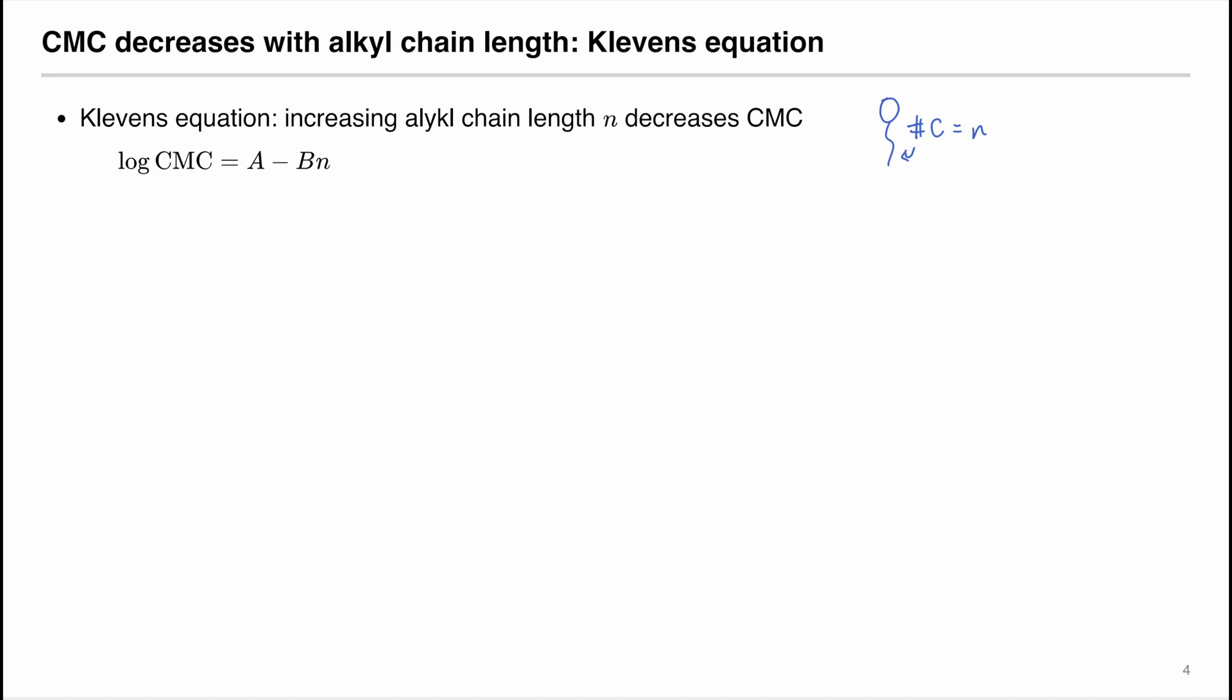So when we graph the log of CMC on the y-axis, and on the x-axis we have the number of carbons, or the alkyl chain length, we would expect to see a negative trend where you'll be able to determine using data. In each of these data points, you can determine the CMC using the conductivity measurements that you have determined.